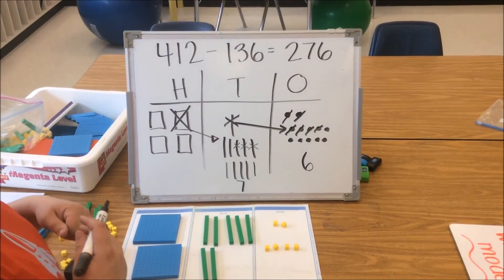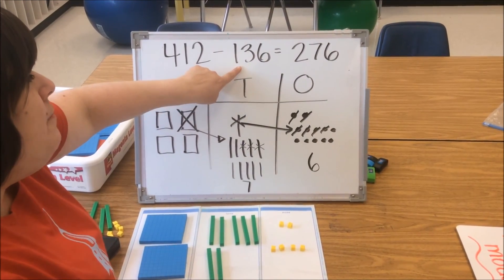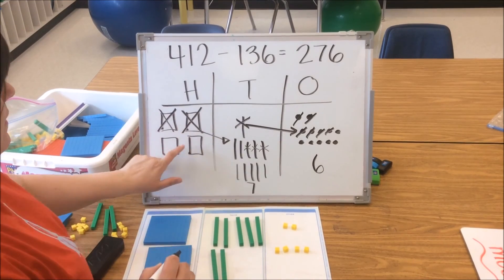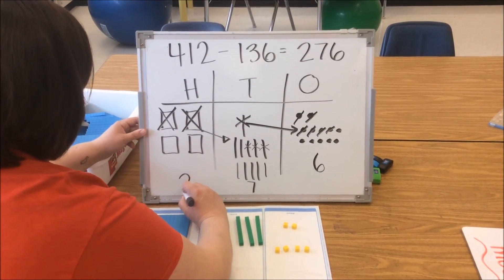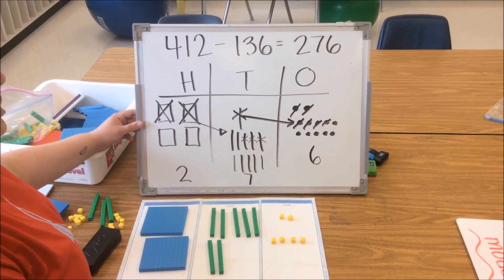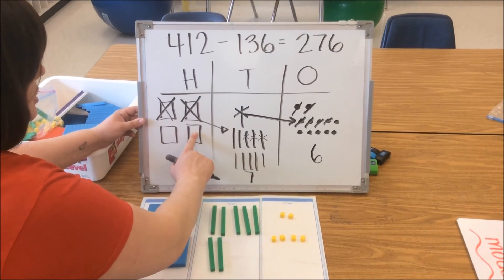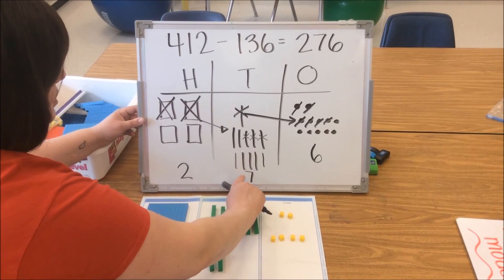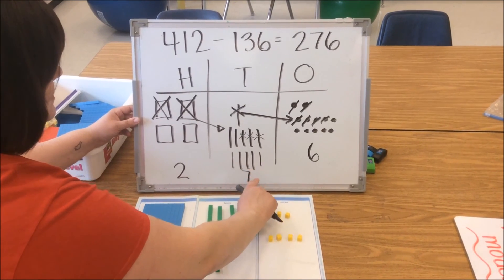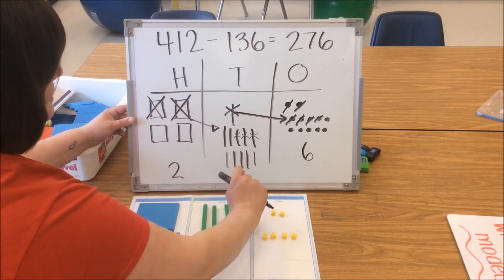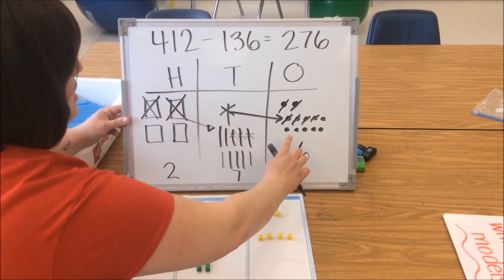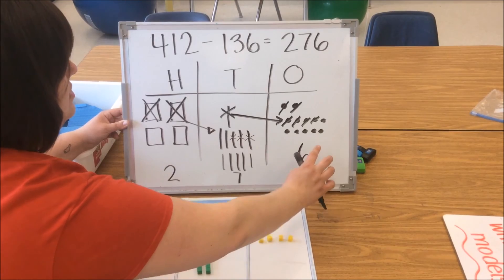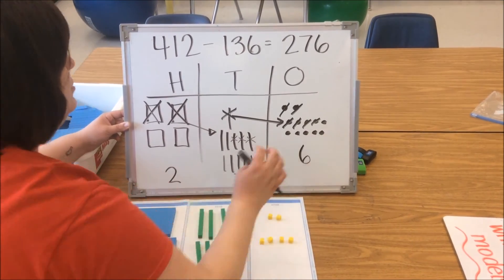We're going to go back to our problem — we need to take away 100, so we cross off that 100 and we have two remaining. Again, let's count our model to make sure it matches our answer: 100, 200, 210, 220, 230, 240, 250, 260, 270, 271, 272, 273, 274, 275, 276.